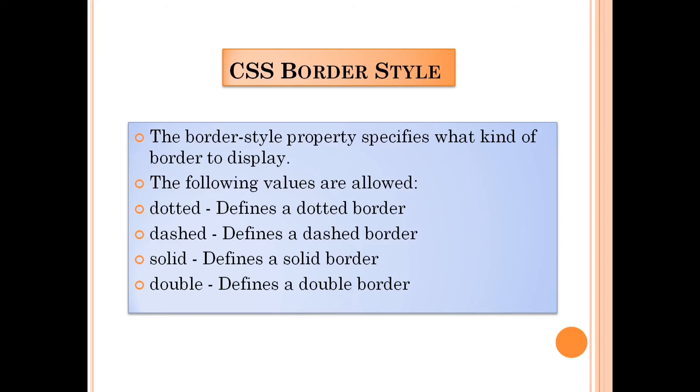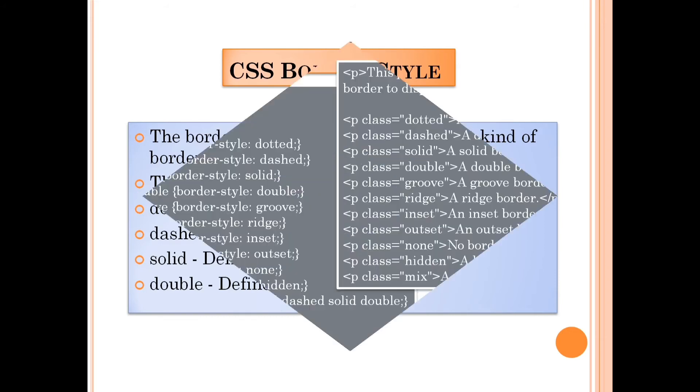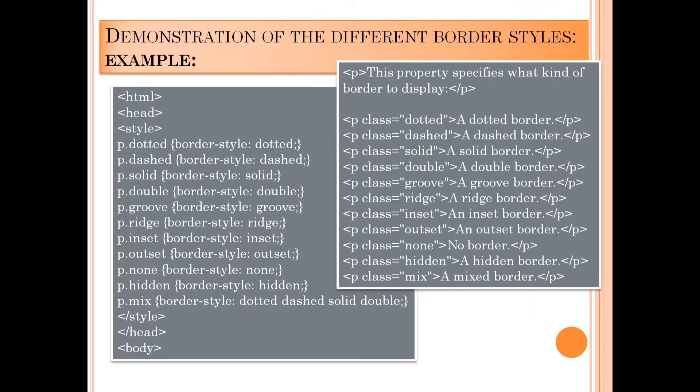The border-style property can have from 1 to 4 values — for the top border, the right border, the bottom border, and the left border. We have these types of border properties.